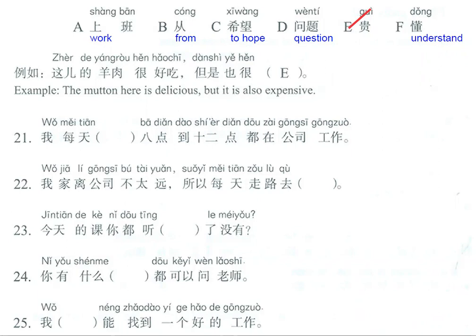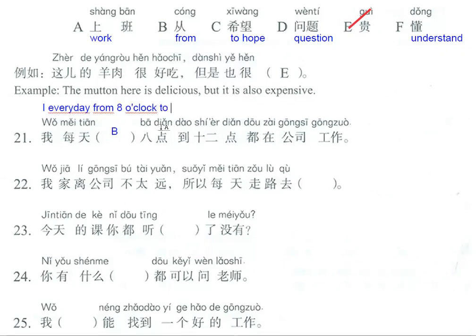Now we're going to do these sentences. For example, the first one: I, every day — here we have from 8 o'clock to 12 o'clock, so the keyword is 'from... to', which means the answer is letter B. The full translation is: I, every day, from 8 o'clock to 12 o'clock, am at the company working.